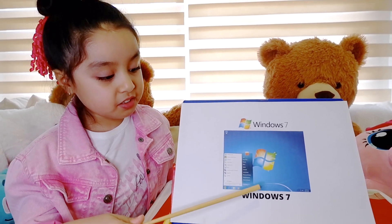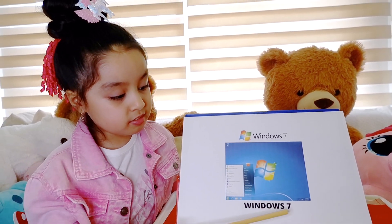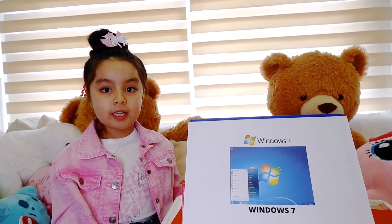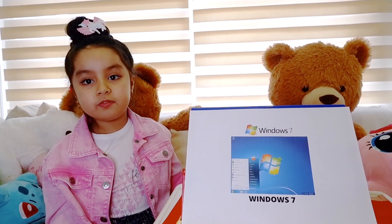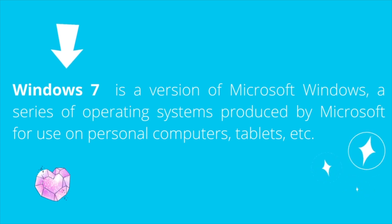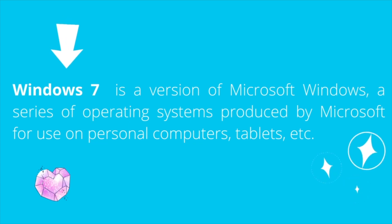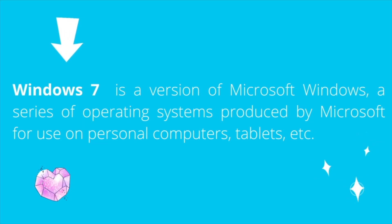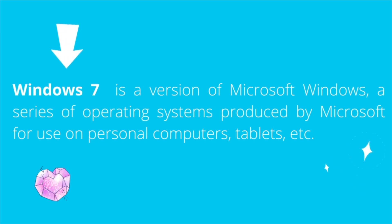The next version of Windows is Windows 7. It is a version of Microsoft Windows — a series of operating systems produced by Microsoft for use on personal computers, tablets, and more.